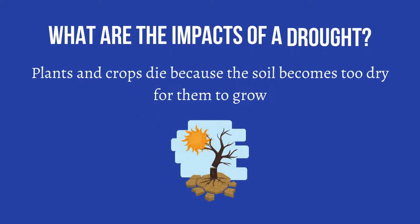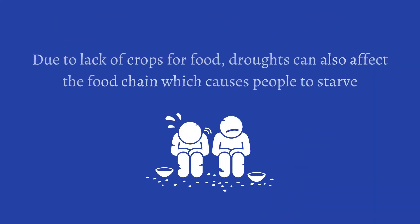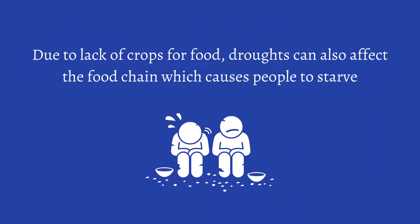What are the impacts of a drought? Plants and crops die because the soil becomes too dry for them to grow. Due to lack of crops for food, droughts can also affect the food chain, which causes people to starve.